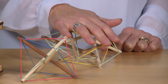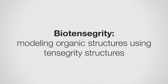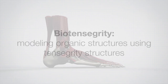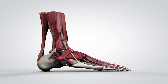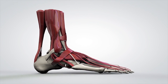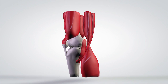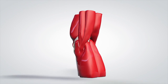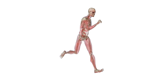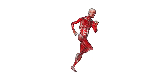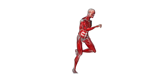Tensegrity models have been used to model the body, and it's called biotensegrity. In a biotensegrity model — which is a model of the human body — the bones are the compression elements and the muscles are the tension elements. The biotensegrity model tends to be less rigid, so there's some flex in these tensegrity models, but most people feel it does a better job of representing the interaction between our bones and muscles.